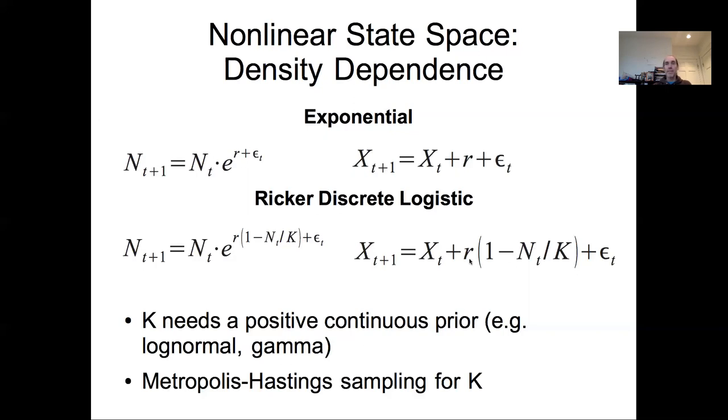With r, we technically can have a wider range of growth rates, including negative growth rates. We wouldn't necessarily have to assume that r is positive. Because this is a nonlinear model, we're going to end up having to do some sort of Metropolis-Hastings sampling for k.